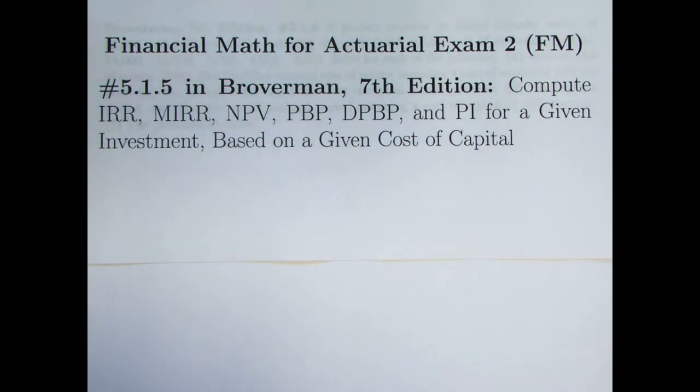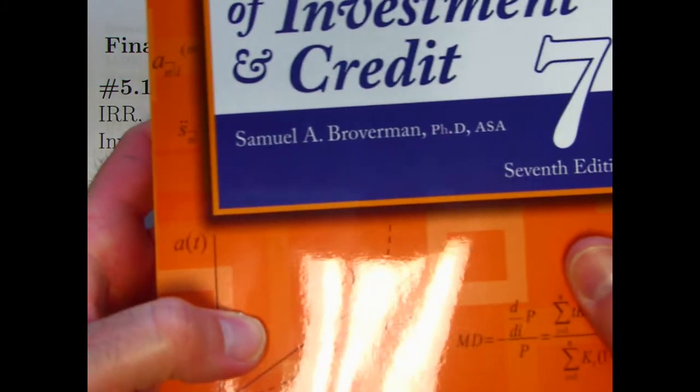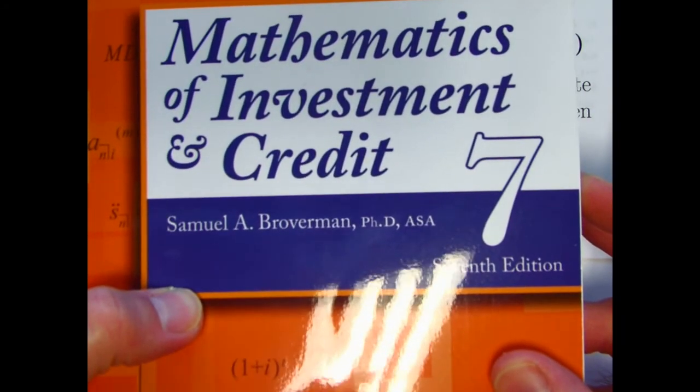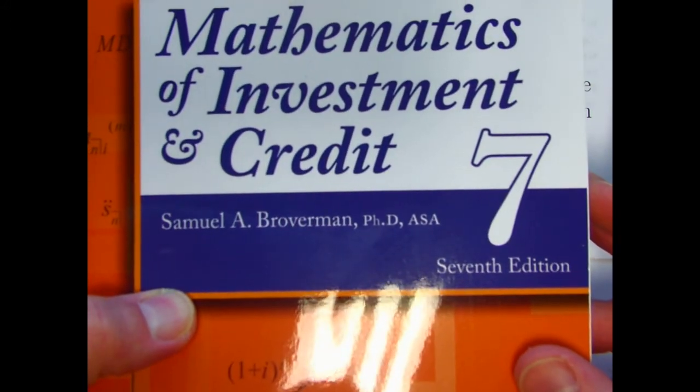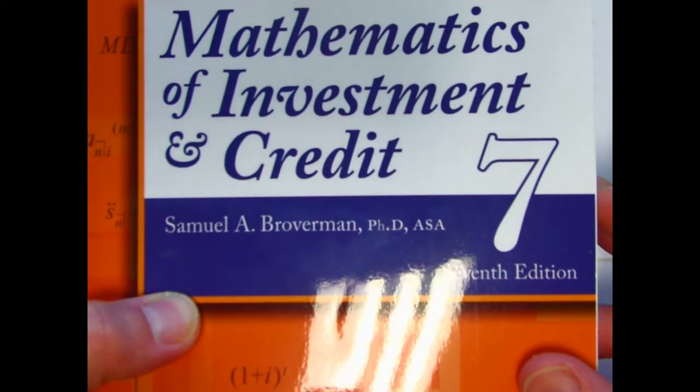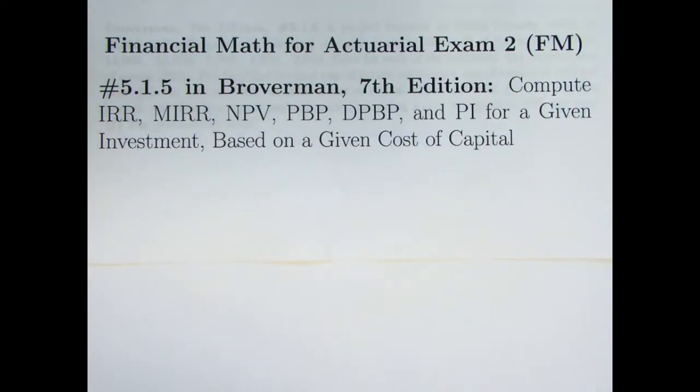In this video, we're taking a look at problem 5.1.5 in this new seventh edition of Samuel Broverman's Mathematics of Investment and Credit that just came out in May 2018. This problem can be found in both the seventh edition and the older sixth edition. However, there's something about the sixth edition that's actually superior here. There was a mistake made in the seventh edition.